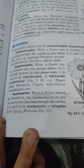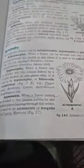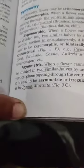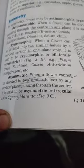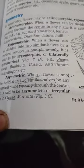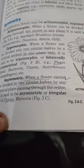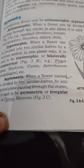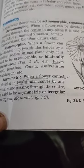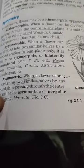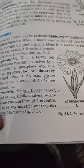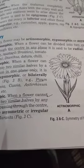An asymmetric flower cannot be divided into two equal halves by any plane of division. A zygomorphic flower can be divided into two equal halves by only one vertical plane. An actinomorphic flower can be divided into two equal halves by any vertical plane passing through the center.